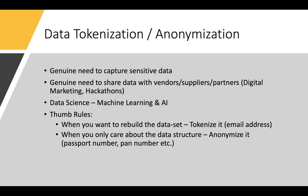For tokenization: whenever there is a business requirement to capture sensitive information from an analytics point of view, your approach should be simple. When you want to rebuild the dataset, always tokenize it. When you only care about the data structure, you anonymize it. For example, in the hackathon event you don't need to tokenize or encrypt - you can anonymize it by replacing a passport number or bank card number with a similarly formatted string. We've adopted two simple rules: if you want to rebuild the database, tokenize it; if you care about the data structure of the attribute, simply anonymize it.